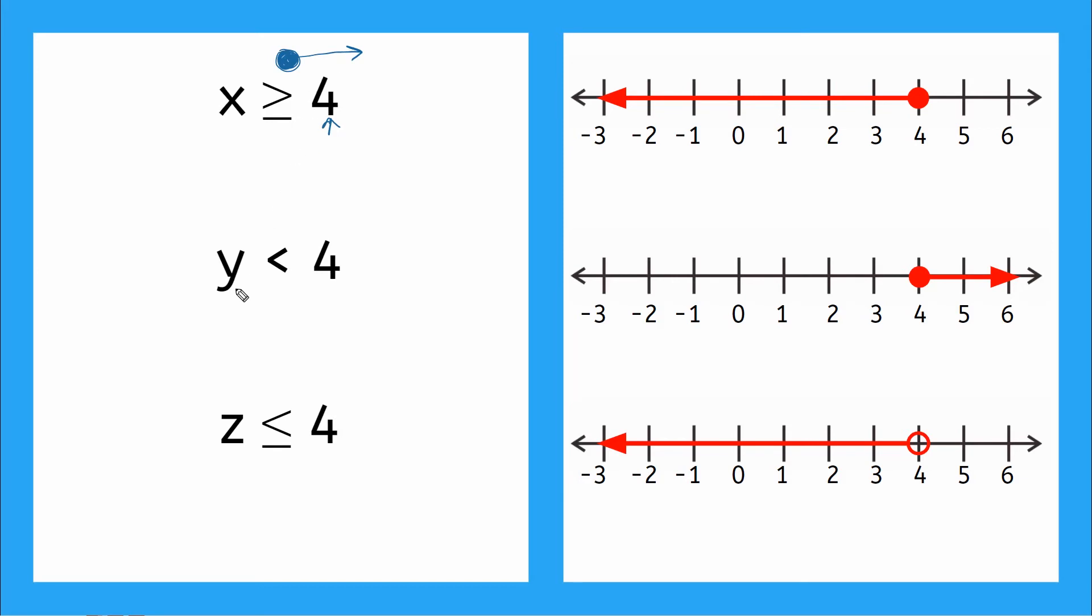Now how about this one? y is less than 4. So this symbol means open circle or closed circle? Open circle. And y is less than 4. So I have my circle, my open circle at 4, and I want all the values that are less than 4. So what direction will my arrow point? And my arrow will point towards the smaller numbers. So towards 0 and all of the negative numbers.